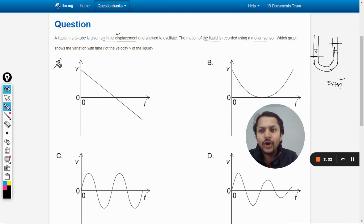So A and B are definitely ruled out. We are left with C and D. Now, what is the difference between graph C and graph D?